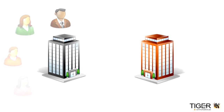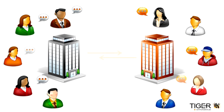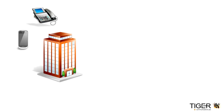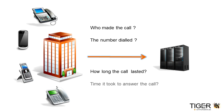Any time a communication is made to or from your organisation, your telephone switch or unified communications platform produces a record. These records contain a range of important details such as who made the call, the number dialed, how long the call lasted, and the time it took to answer that call.